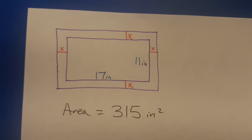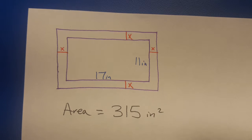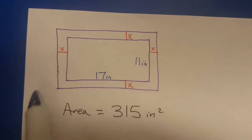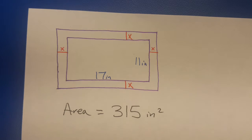Hey students, I wanted to go over this problem from the notes. We have a photo that's 17 by 11 and you want to put a frame that's the same width in all directions around your photo, and then you want the overall area with the frame and the photo to equal 315 square inches.